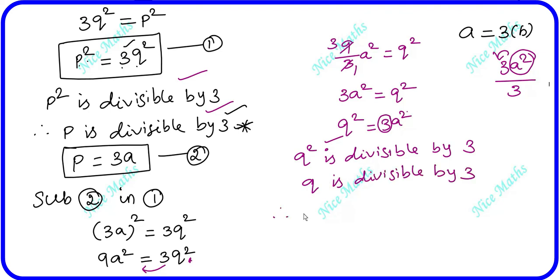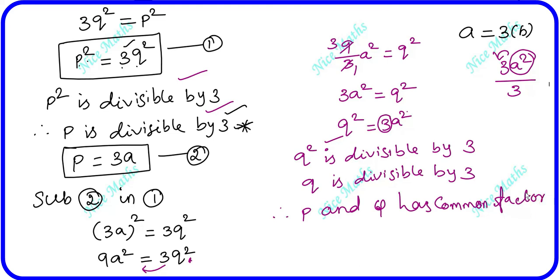Therefore, both p and q are divisible by 3, which means 3 is a common factor of p and q. For example, the number 6 is 2 into 3, and 9 is 3 into 3 — both share the factor 3.